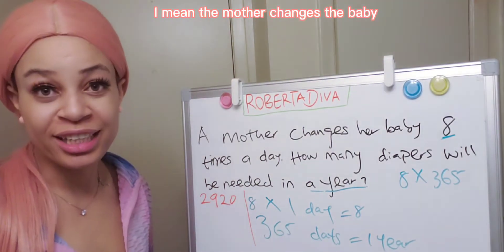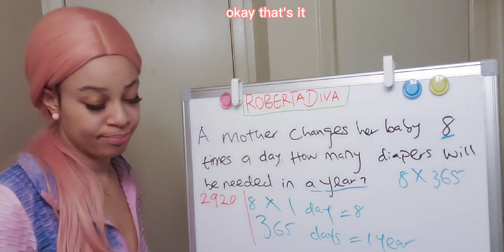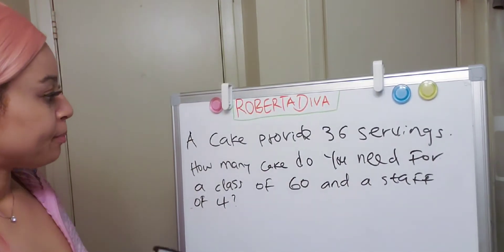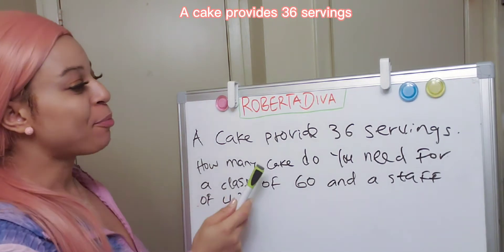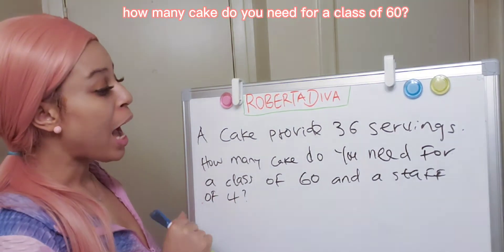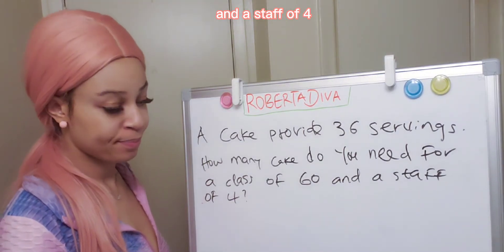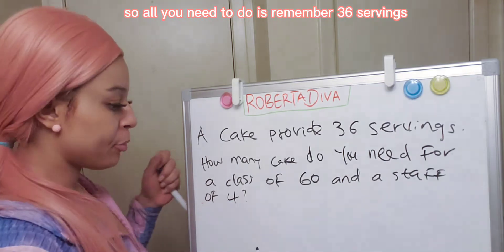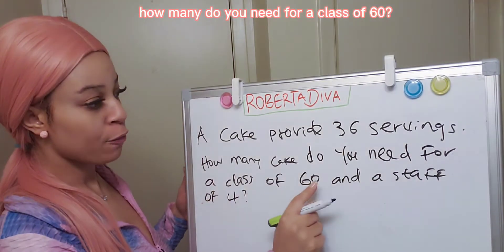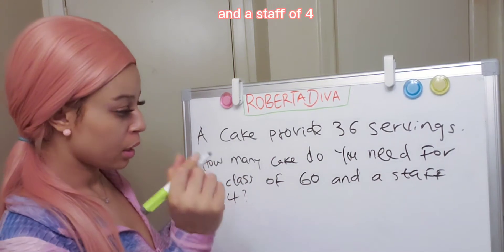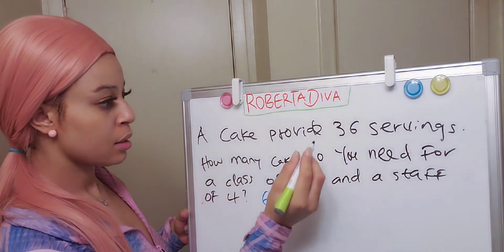Here is one more. A cake provides 36 servings. How many cakes do you need for a class of 60 and a staff of 4? All you need to do is remember: 36 servings per cake. How many cakes do you need for a class of 60 and staff of 4? So let's add everybody together to know how many people we have.